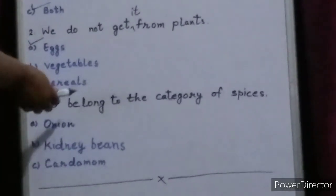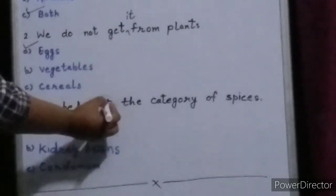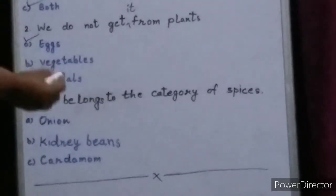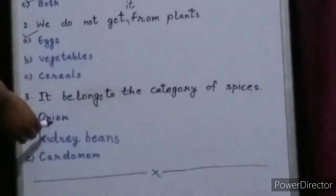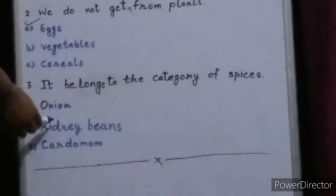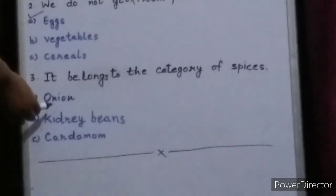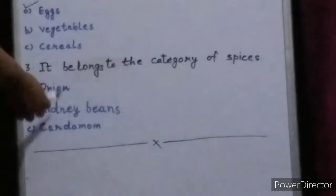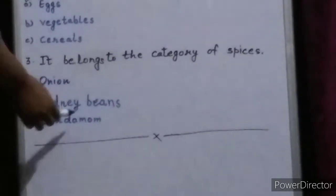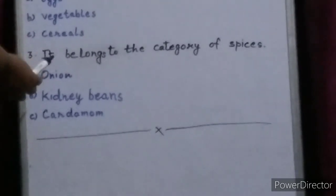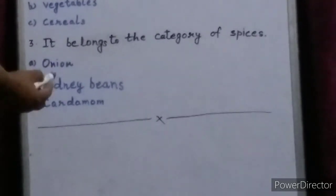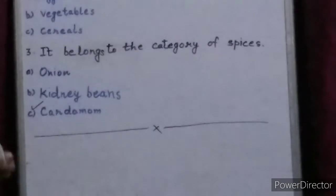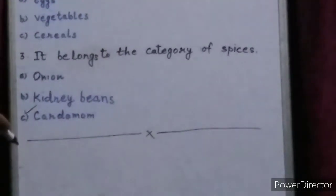Third question: It belongs to the category of spices. Options are: A, onion; B, kidney beans; or C, cardamom. Onion is a vegetable. Kidney beans is a type of pulse, also known as rajma. And cardamom is a spice — the small green chhoti elaichi. So the correct answer is C, cardamom, because cardamom belongs to the category of spices.